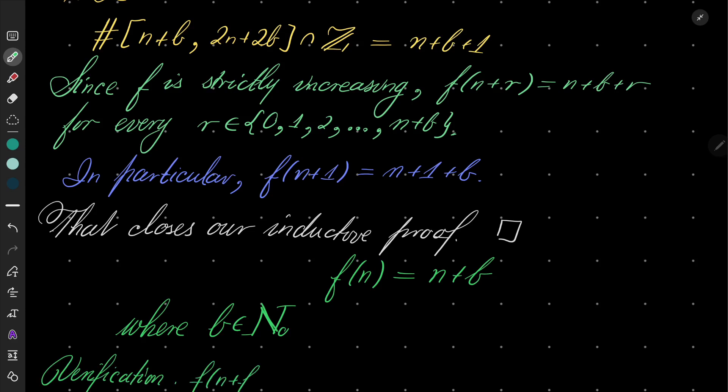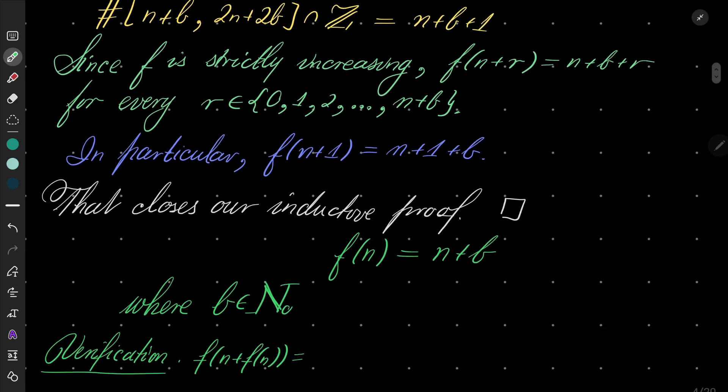f(n + f(n)) = f(n + n+b) = f(2n+b) = 2n+2b, and that is exactly 2f(n). So every function of this form satisfies our equation. And that is our result: f(n) must be n+b, where b is some natural number.